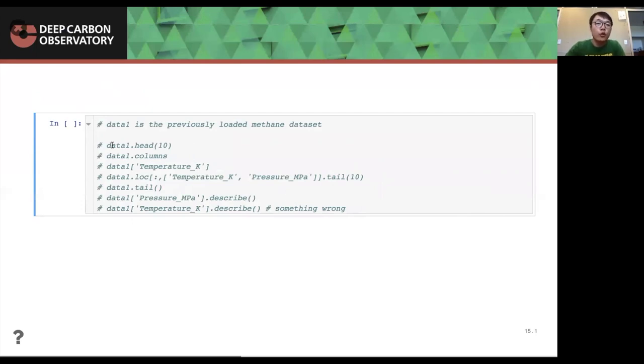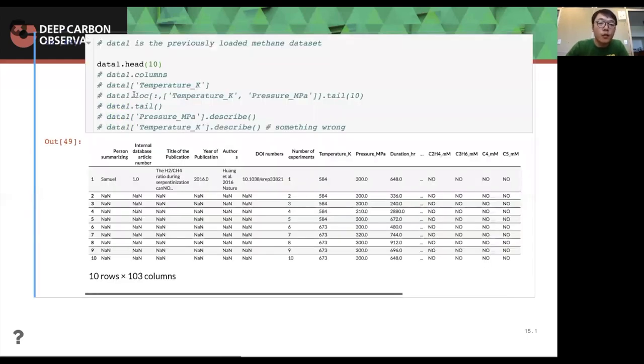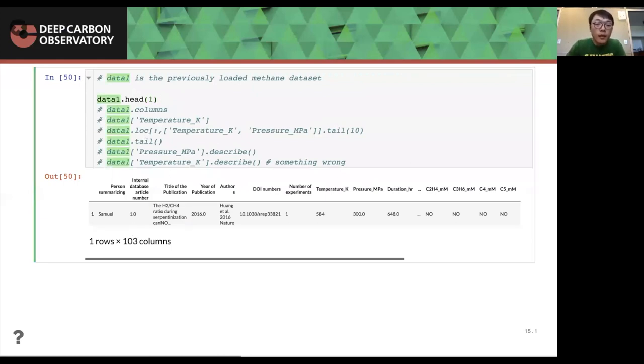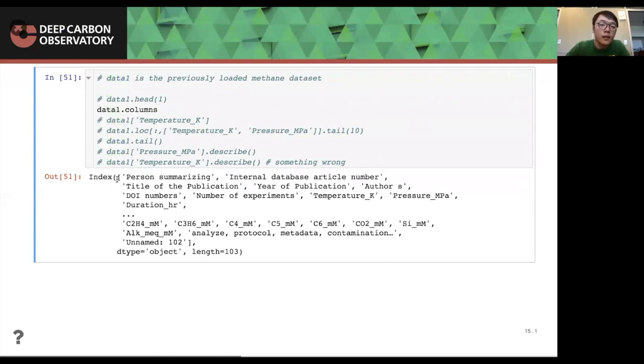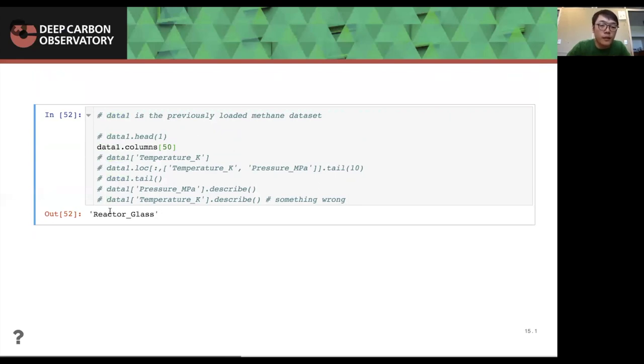So here I will basically show you the functions of a data frame. So, you can see data one is the previously loaded methane data set. If we want to see the top rows of the data frame, we can use the data dot head. We can like say we can use data higher than one. Then it will show only one row of that. And also we can use data dot columns. It will return a list of all the column names in this, and it doesn't show everything, but it's in there.